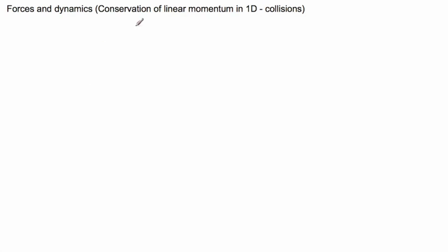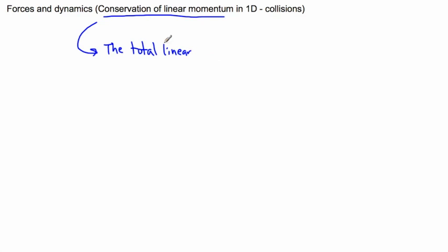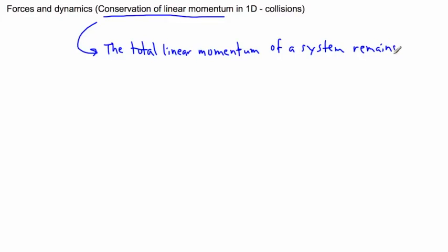First of all, what do we mean by conservation of linear momentum? We mean that the total linear momentum — and I say linear just because we could also have angular momentum, which is also conserved — the total linear momentum of a system remains constant. When I say total, I mean add up all the different things you have.